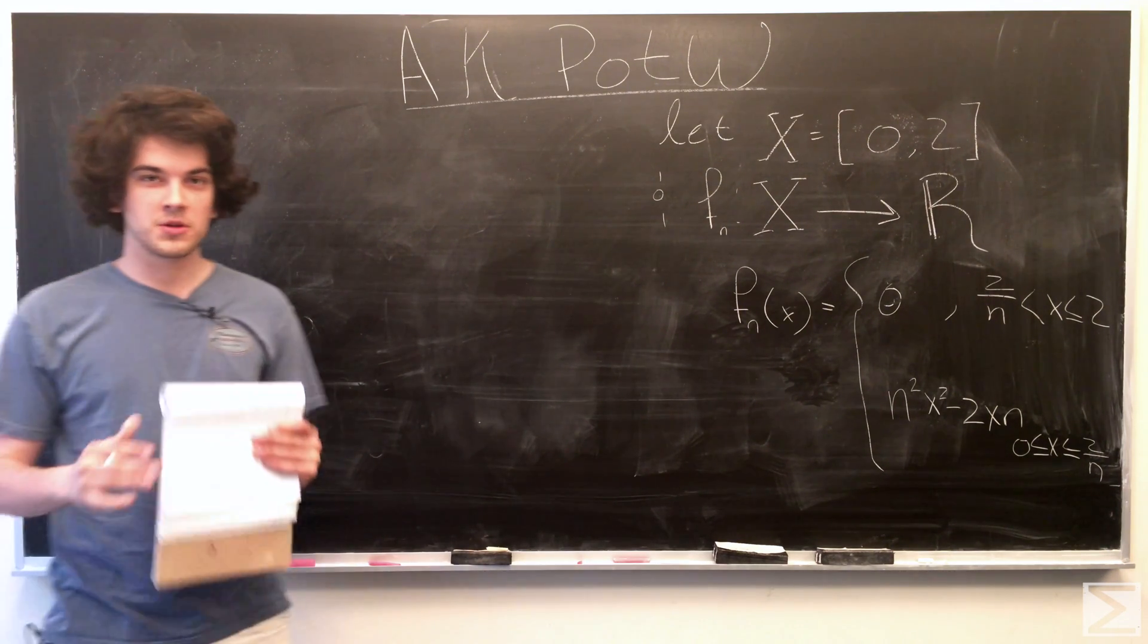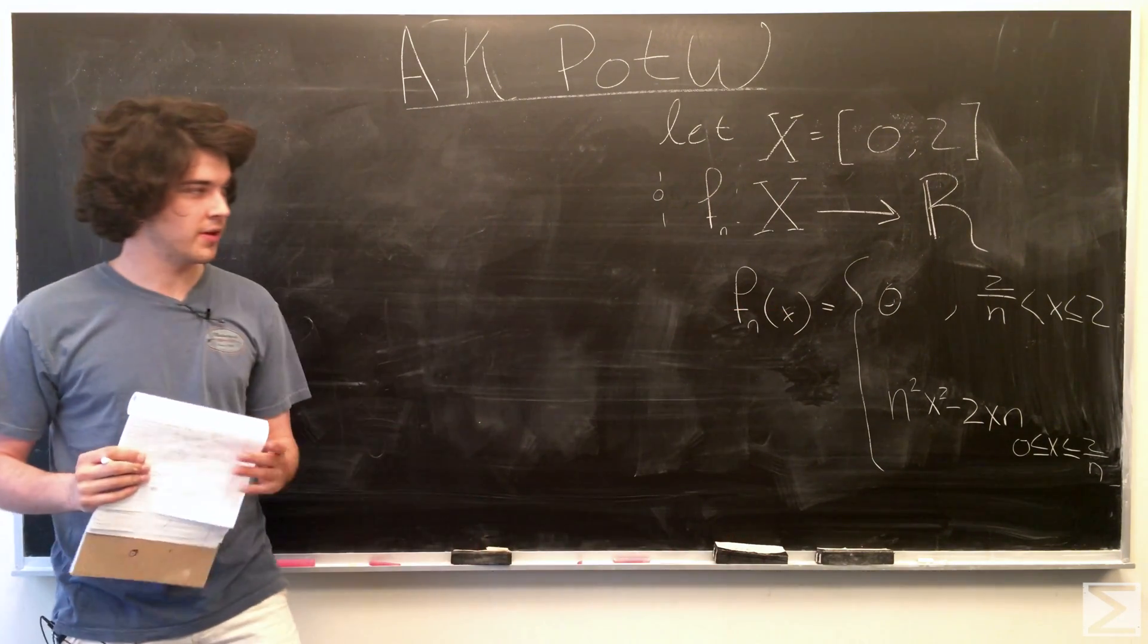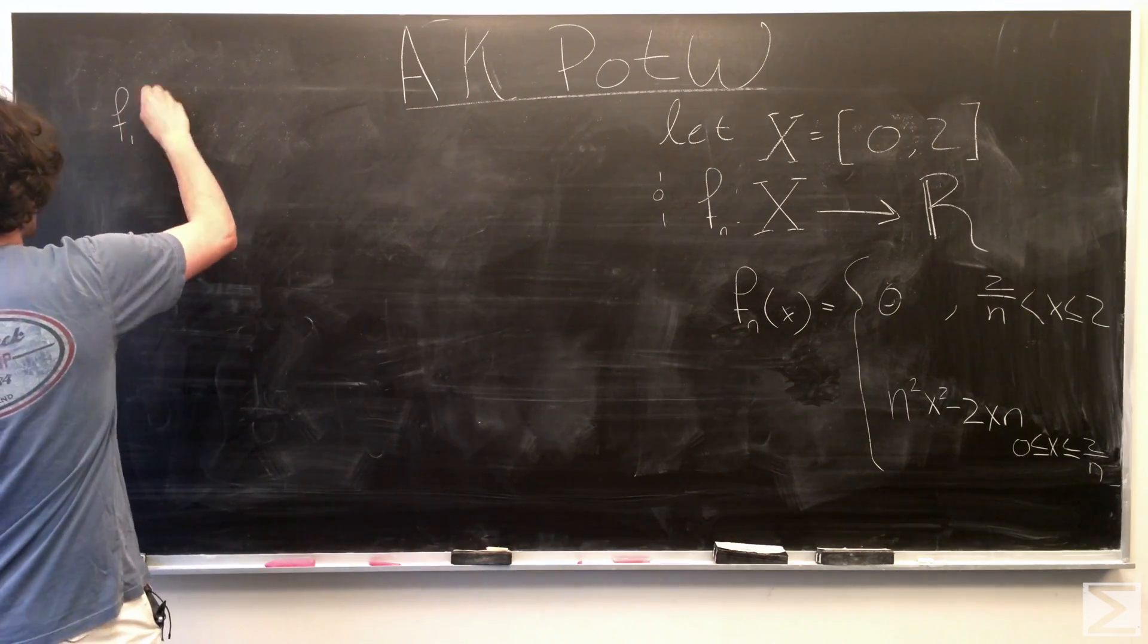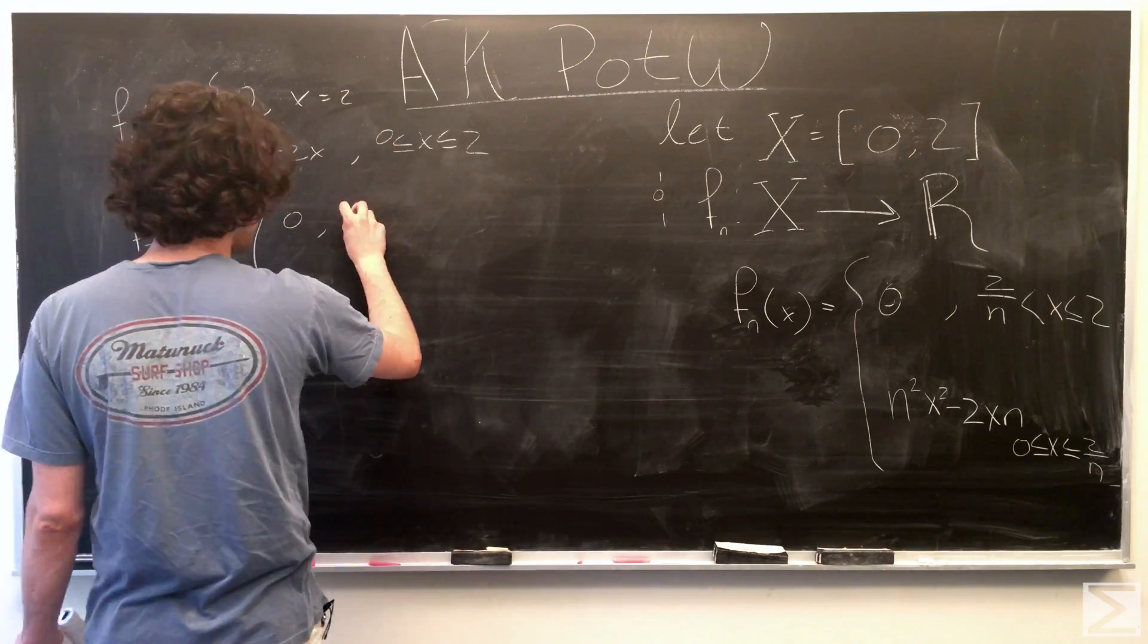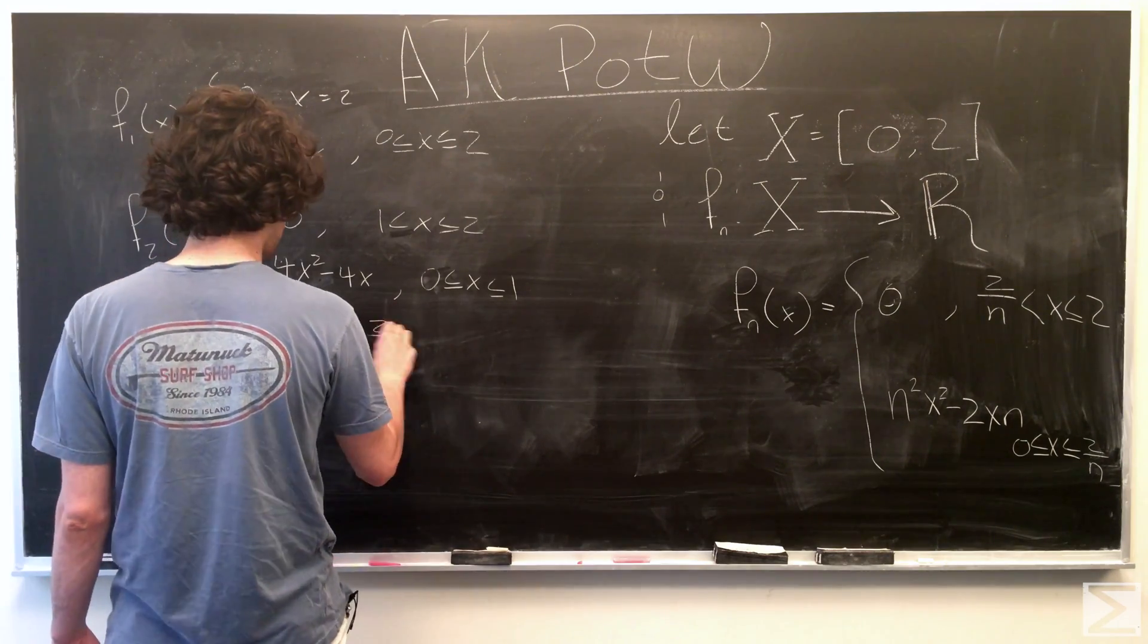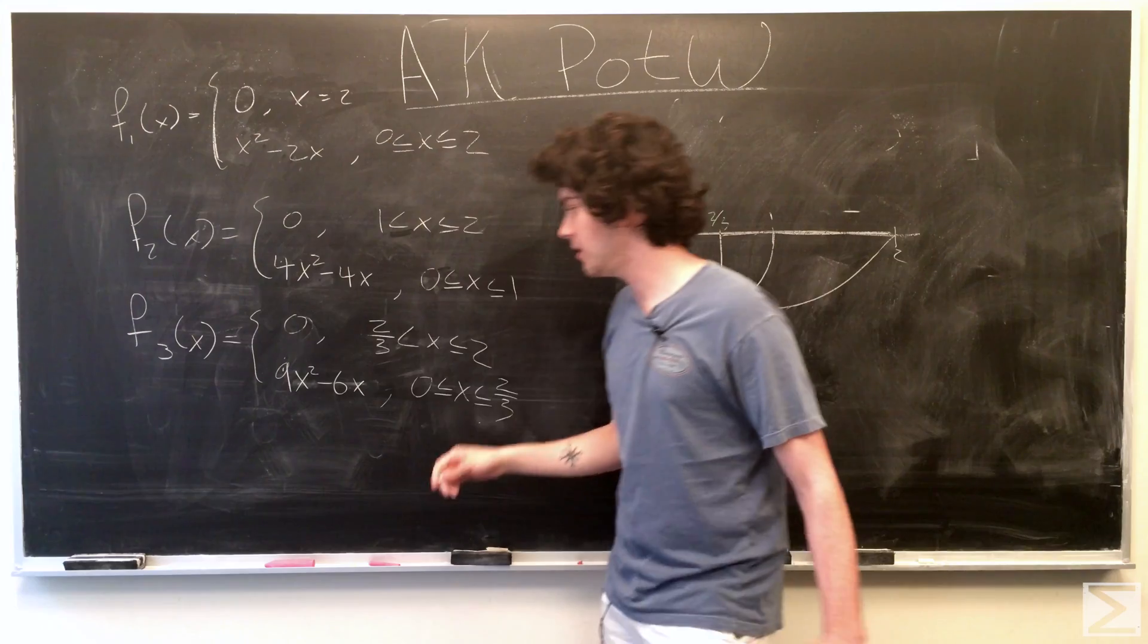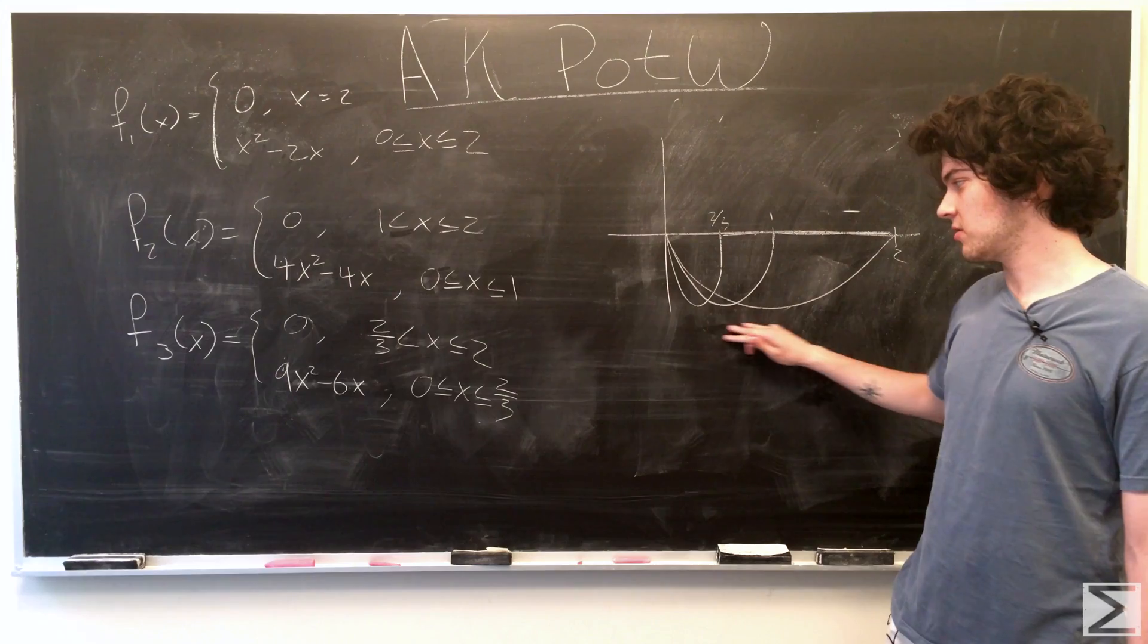First we should look at what's going on in this sequence of functions by looking at f sub 1 of x, f sub 2, and f sub 3. I'm just going to write those out. So, I've written out f1, f2, and f3, but it's really useful to look at this on a graph.